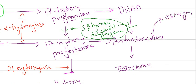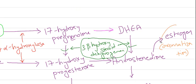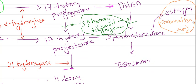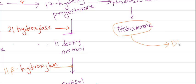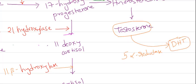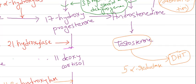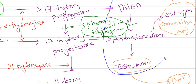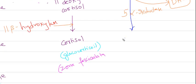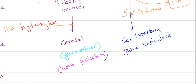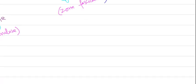From androstenedione, we get testosterone. Through a process called aromatization in peripheral tissues such as adipose tissue, androstenedione is also converted into estrogen. Testosterone is further converted into dihydrotestosterone (DHT), which is a more potent form of testosterone, via 5-alpha reductase, also in peripheral tissue. All the sex hormone synthesis reactions occur in the zona reticularis.